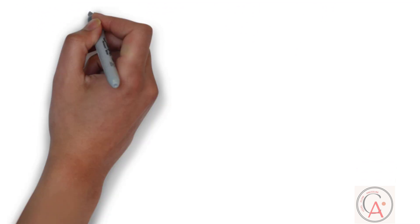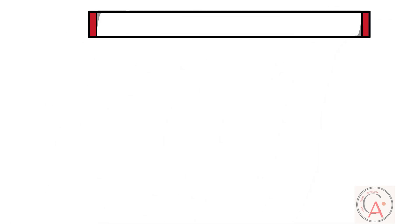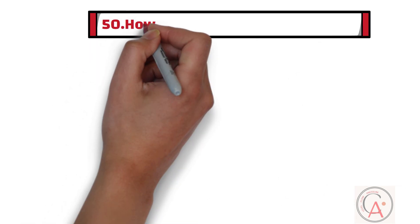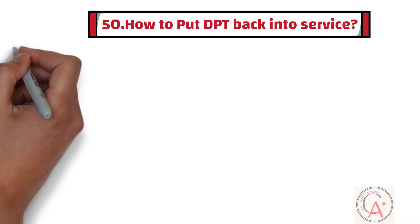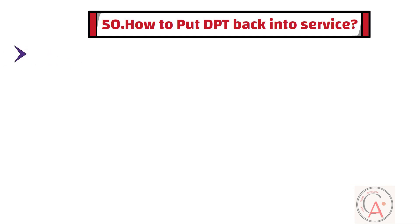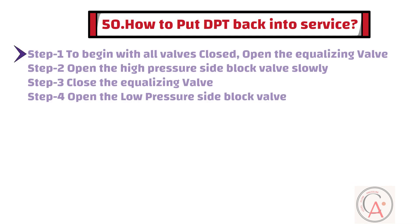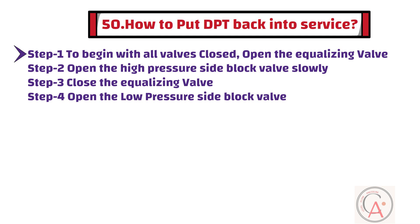Question 50: How to put DPT back into service? To put DPT back into service, begin with all valves closed, then open the equalizing valve. Then open the high pressure side block valve slowly. Then close the equalizing valve. At the end, open the low pressure side block valve.